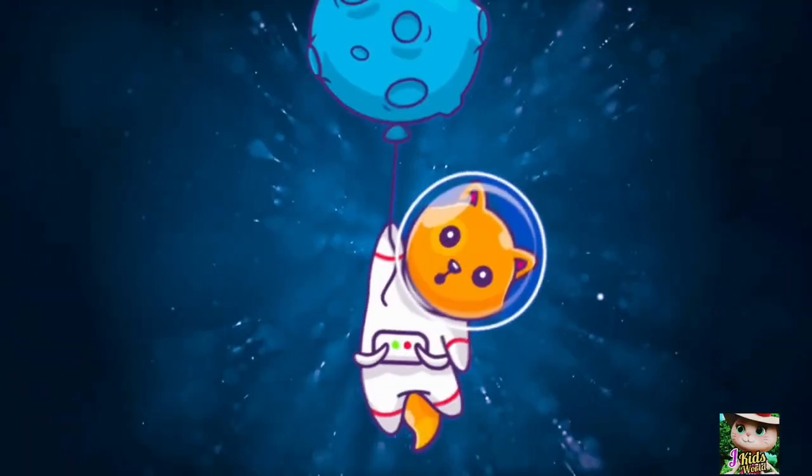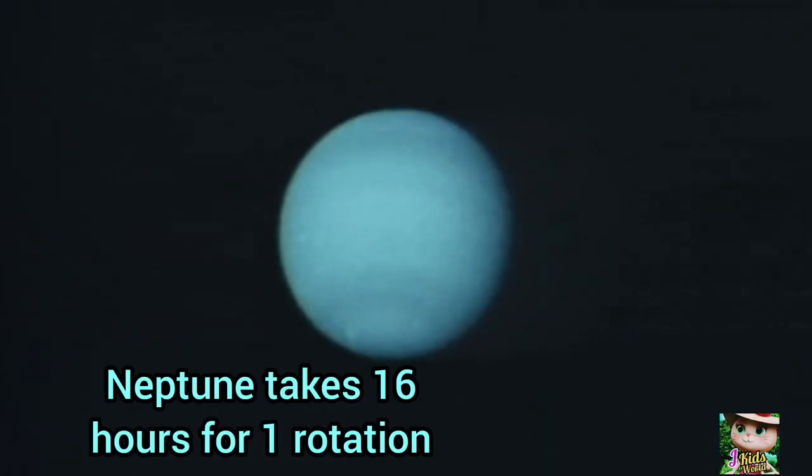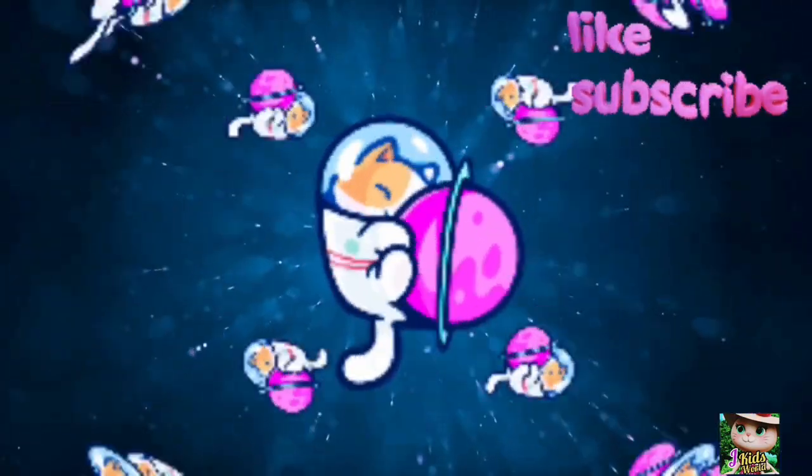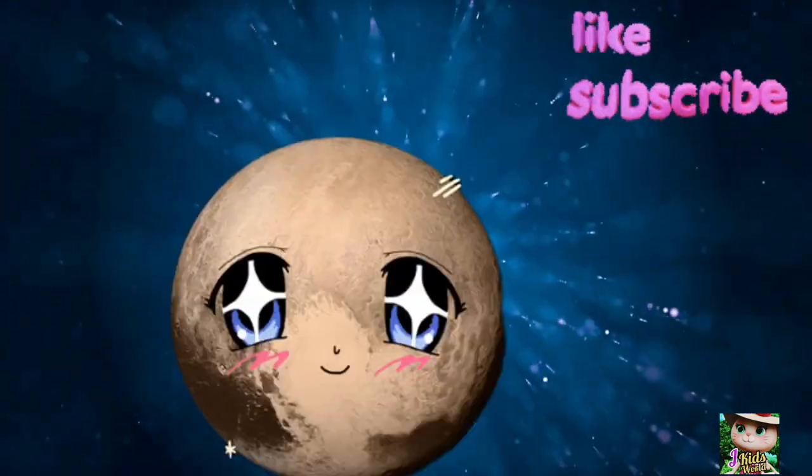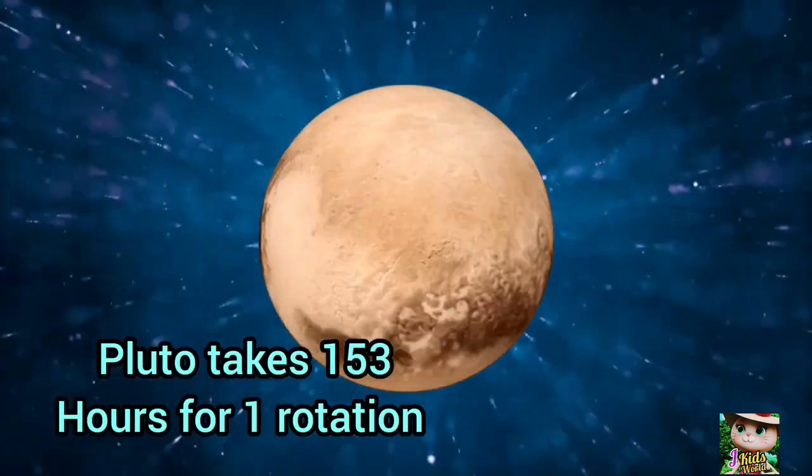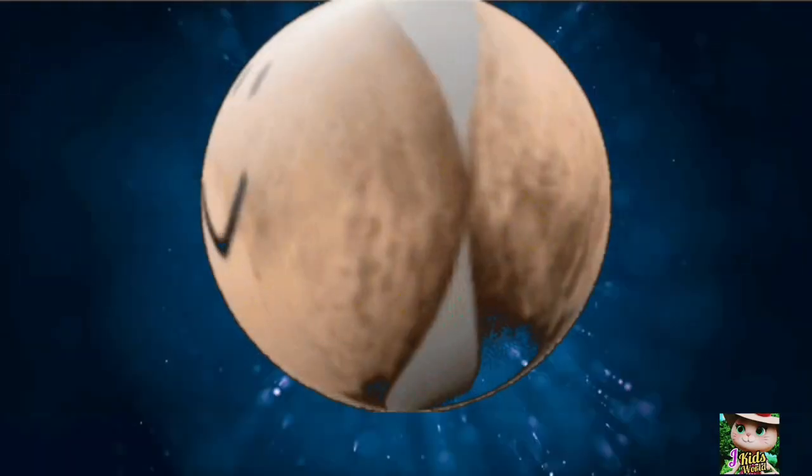Neptune takes 16 hours to complete one rotation. The dwarf planet takes 153 hours to complete one rotation.